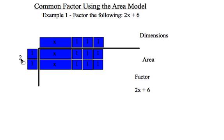Now on the left-hand side, I have a dimension of 2. On the top, I have a dimension of x plus 3. So when I factor 2x plus 6, the result is 2 times the bracket of x plus 3.